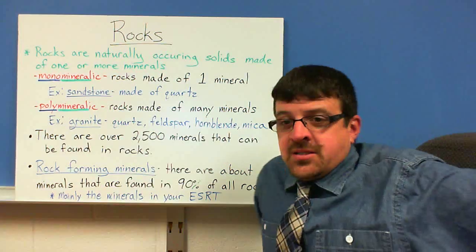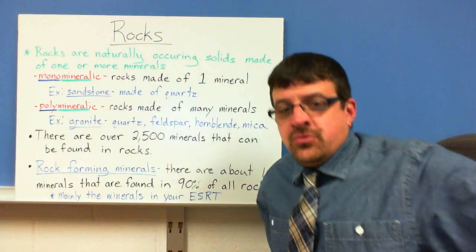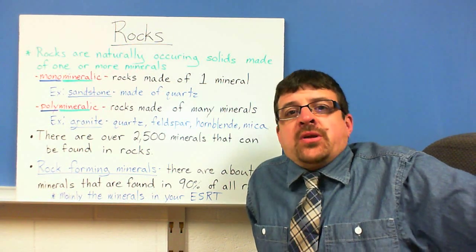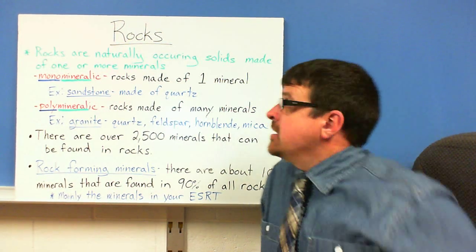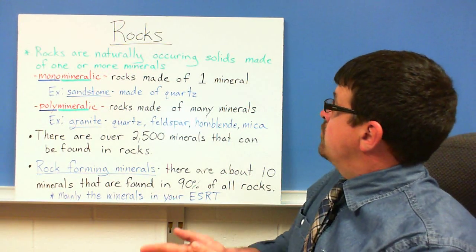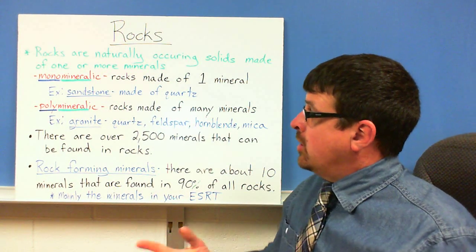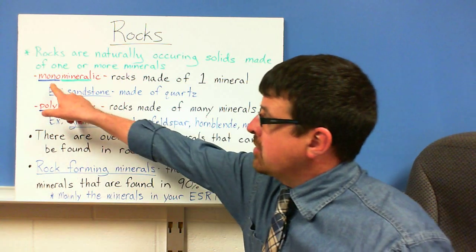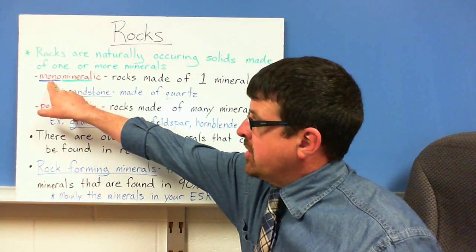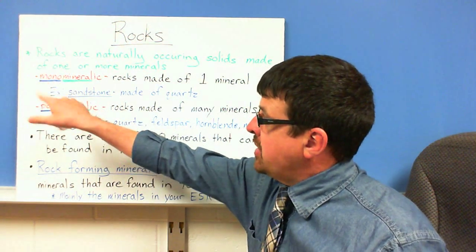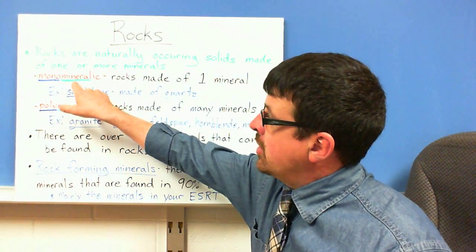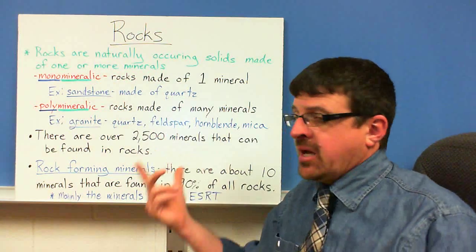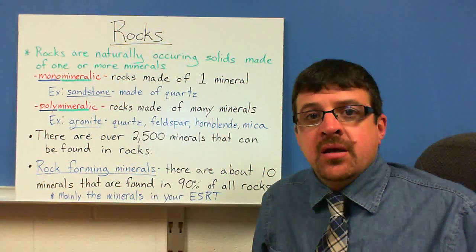Today we're going to talk about rocks. Rocks are naturally occurring solids that are made of one or more minerals. One mineral would be monomineralic — mono meaning one — so one mineral in the rock is a monomineralic rock.